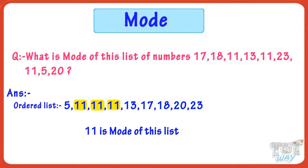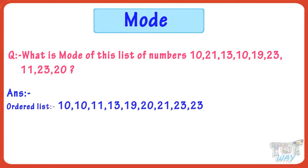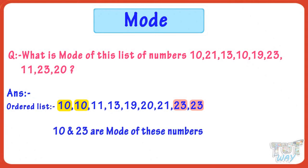Let's take another example and find the mode of this list of numbers. First, write the numbers in increasing order. Now we can see both 10 and 23 occur two times in the list. So both 10 and 23 are modes of the list.